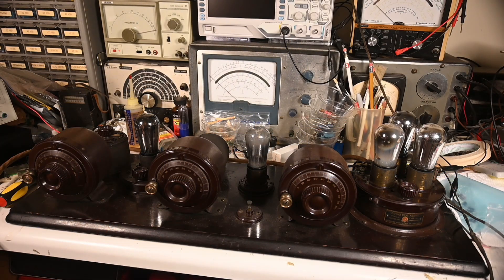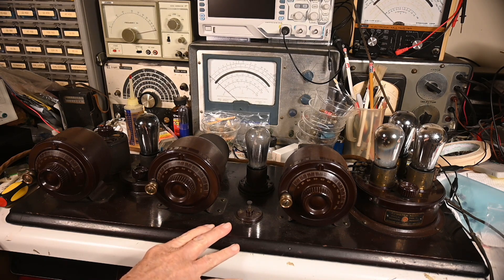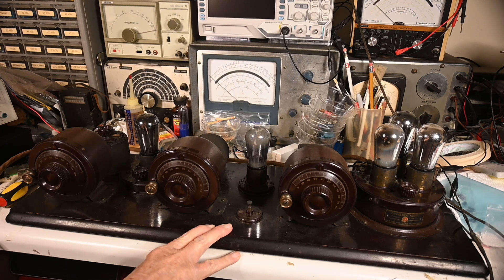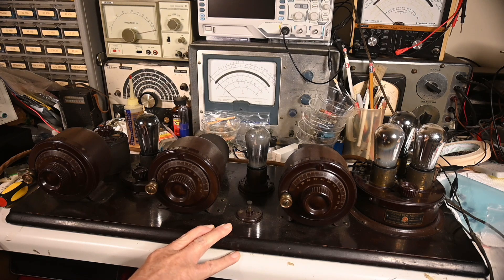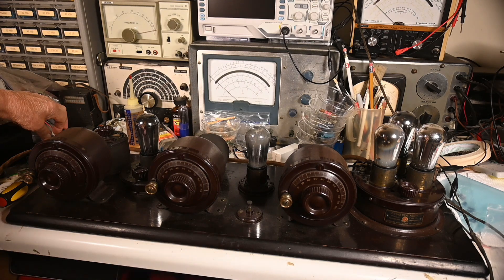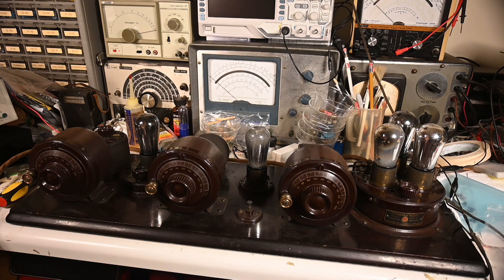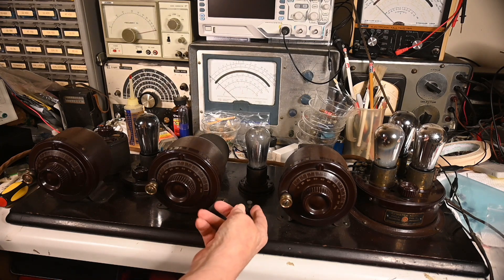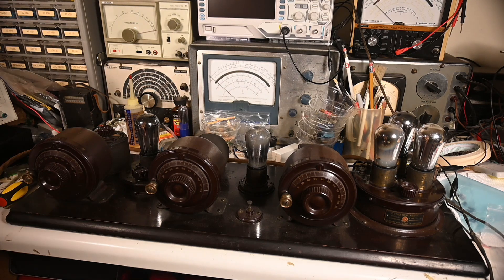Here's my Atwater Kent number 10 breadboard. It was manufactured in 1923, so it is a hundred years old. I've got the antenna hooked up with a few alligator clips. I don't have a ground on it, which would make it perform better, but it still works. So I'm going to apply power. This is the switch right here, it's on right now. I'm going to turn the power on.